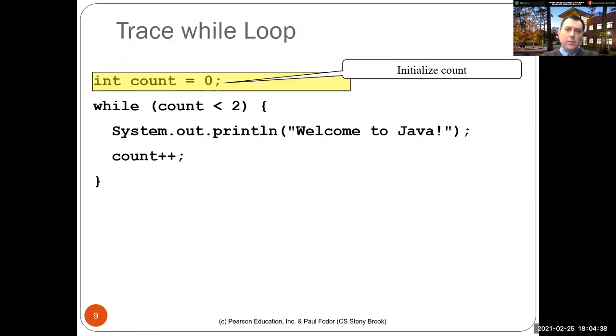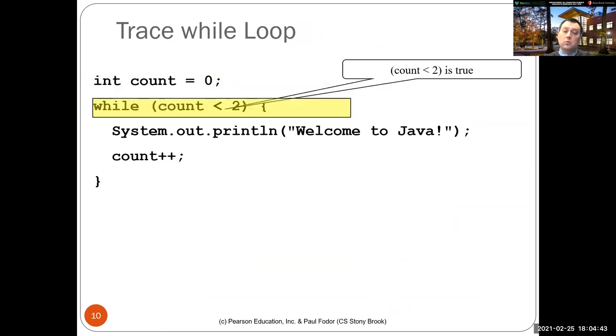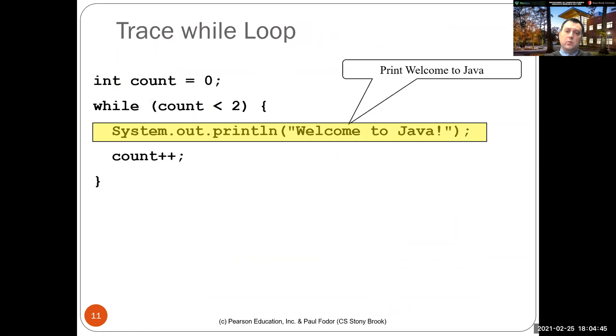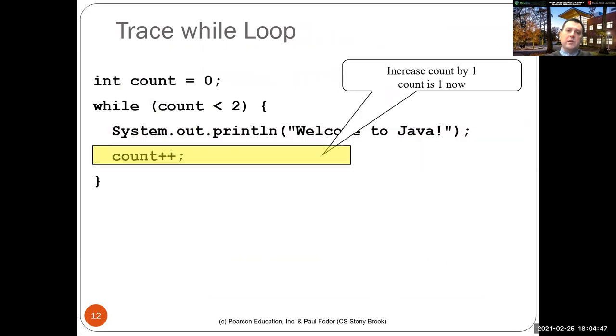So here we can actually trace it for two. So the count is zero. Zero less than two is true. We print once 'Welcome to Java', increment the count to one, from zero to one.